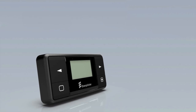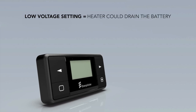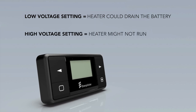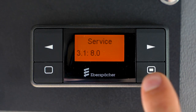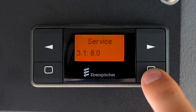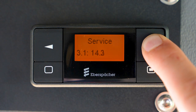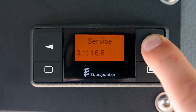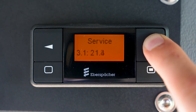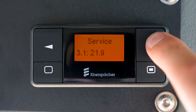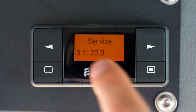If the voltage setting is set too low, the heater could drain the battery and the machine may not start. If this setting is set too high, the heater might not run. To adjust the setting, press the enter button, then use the right and left arrow buttons to select the desired value. You can also press and hold the right and left arrow buttons to continuously increase or decrease the value. Press the enter button to save the value.